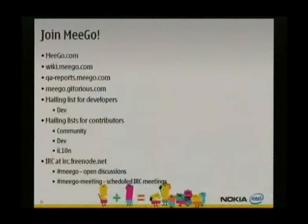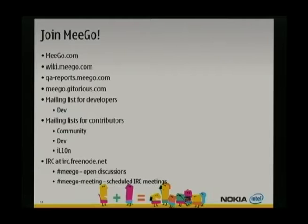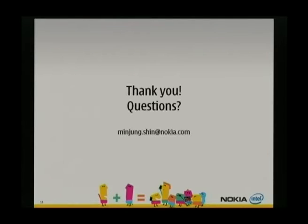There are many ways to join MIGO and contribute. Go to MIGO.com to find out about MIGO, check the wikis for release cycles and current status, and go to QA-reports at MIGO.com if you're interested in quality. There are also mailing lists and IRC channels. Thank you — any questions?